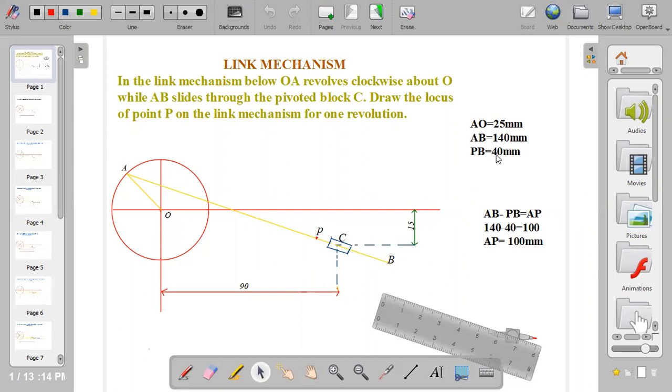So we have to calculate the distance of AP. How do we get AP? From the rod we have AB which equals 140, so we subtract PB which is 40 from the total sum of 140. From AB remove PB, then you have 100mm from point A to point P.